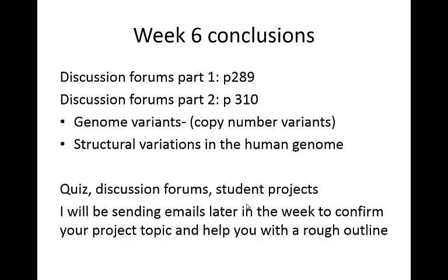For this week, for the discussion forums, you can pick one or both of these parts. Part 1 is at the end of chapter 11, on page 289, where it talks about telomeres. Part 2 is at the end of chapter 12, on page 310, where it talks about genome variants, copy number variants, and structural variations in the human genome, and how that might be related to different disease conditions. Read over these end-of-chapter sections and discuss them in the discussion forum this week.